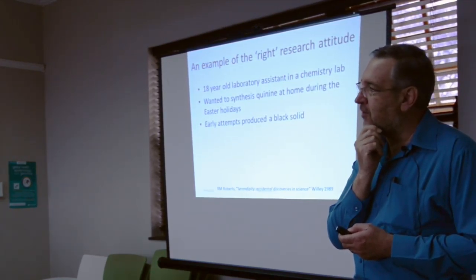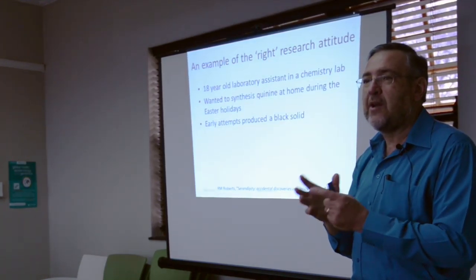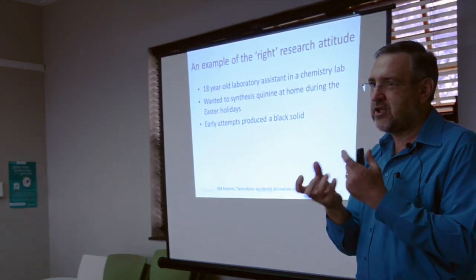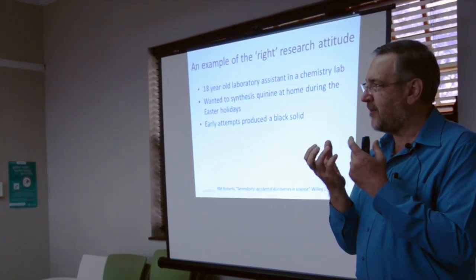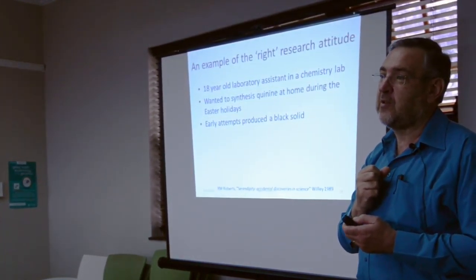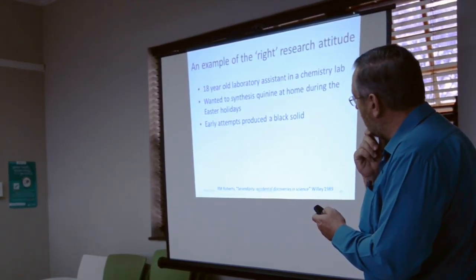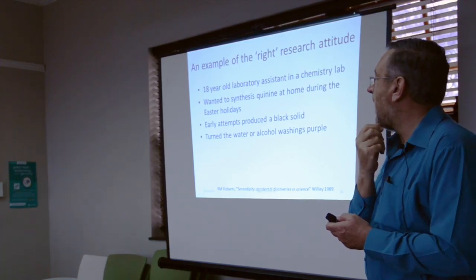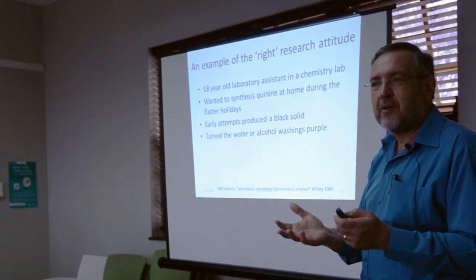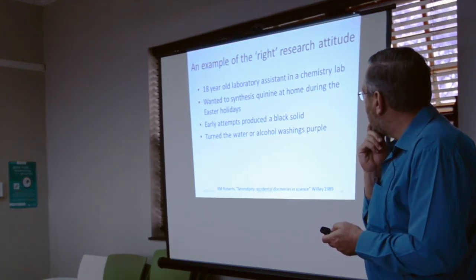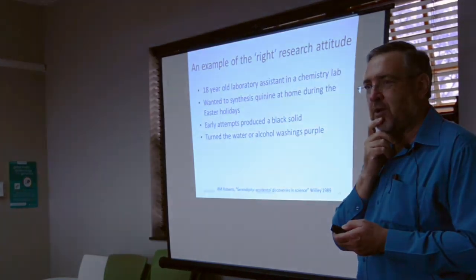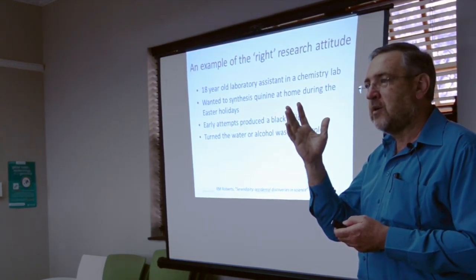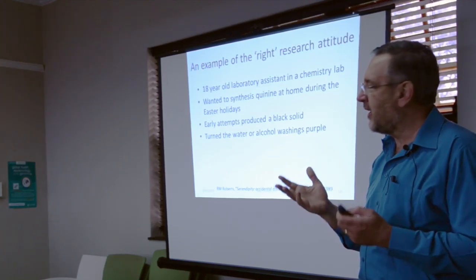His early attempts produced a black solid. Now, do you remember from your chemistry days, if you did some chemistry, if your reaction went wrong, what happened to it? It would turn into a tarry, gunky, dark brown, blackish lump at the bottom of your beaker. So that's bad, bad news. When you're trying to do something really special and it turns into that, that's very bad news. And what do you have to do? Well, you have to wash your beaker out to get this black tar out. And how do you do that? Well, you try some water, you try some alcohol, etc., etc.